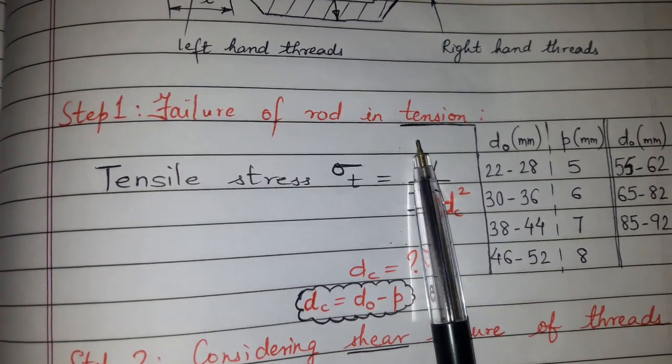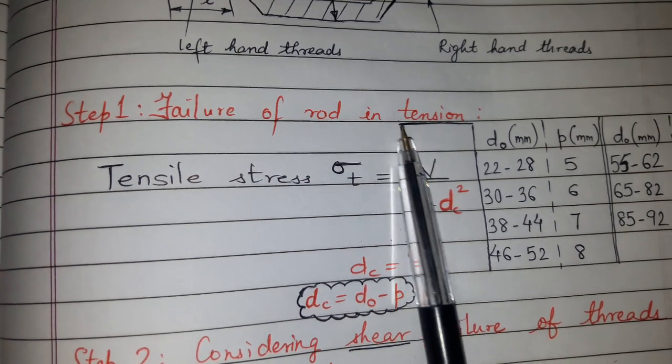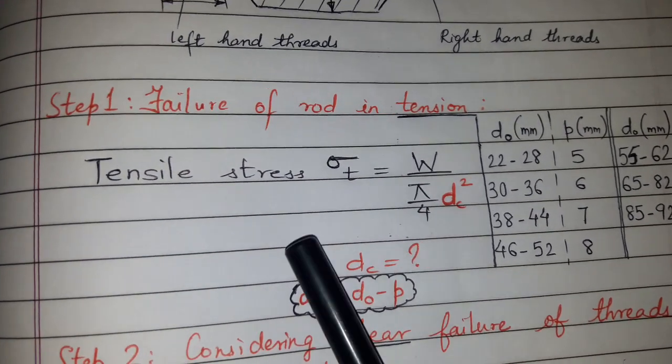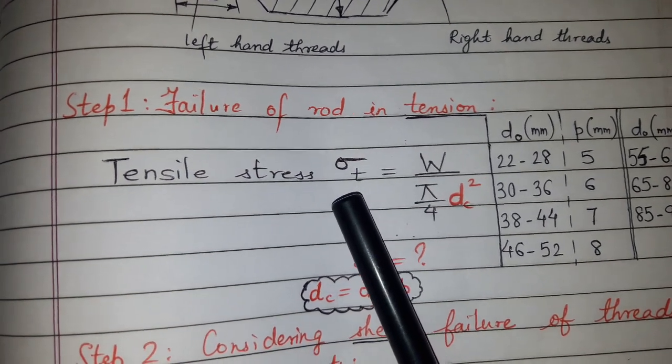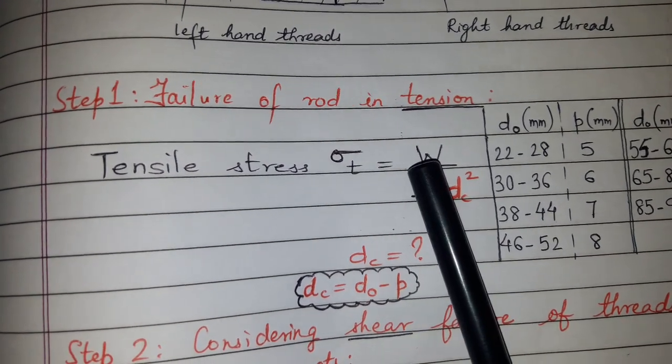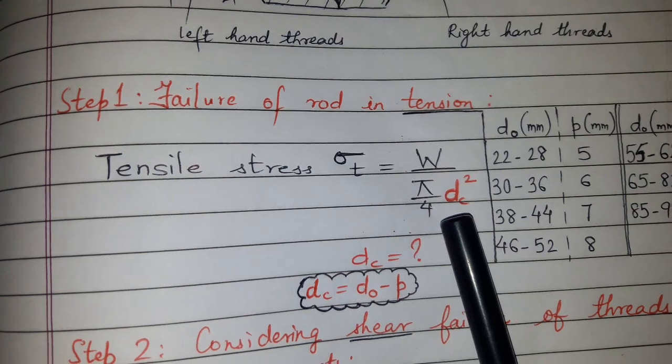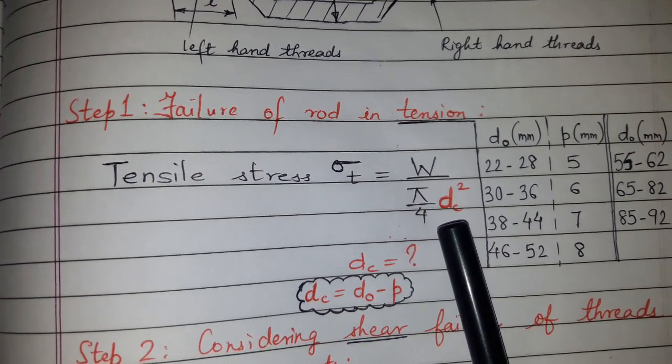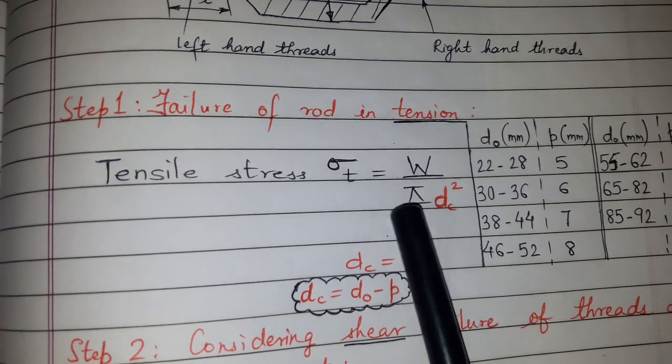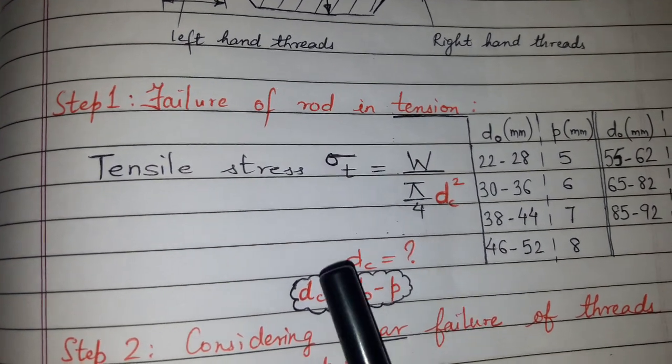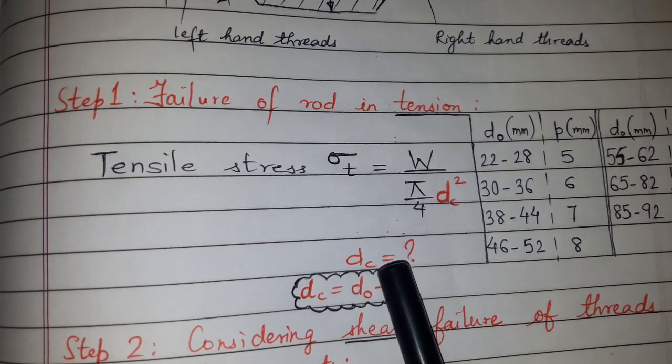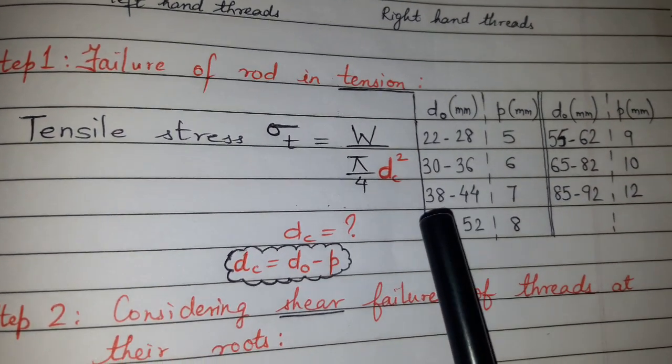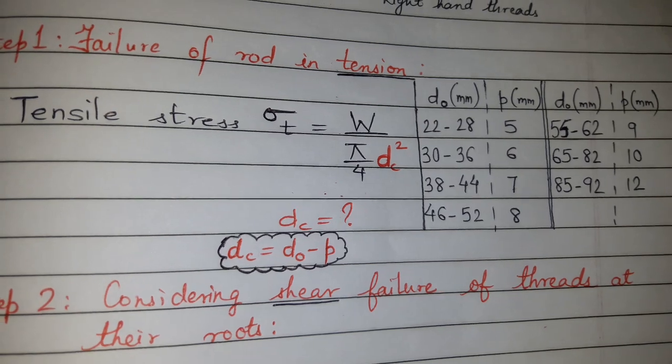Step one: failure of rod in tension. We have taken that the rod can fail in tension. Tensile stress equals the load, from which we can find DC, the core diameter, which can fail in tension because the rod will fail because of the core diameter. We found the core diameter, but we have to find the nominal diameter.